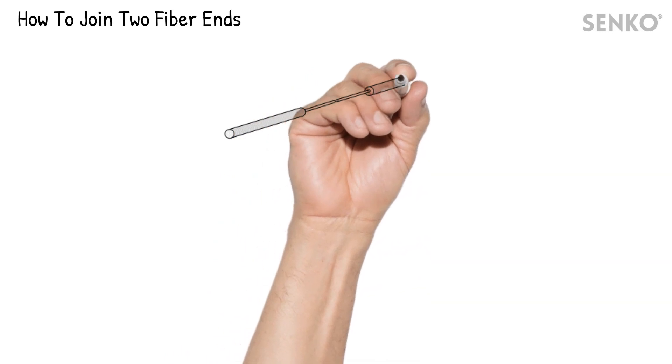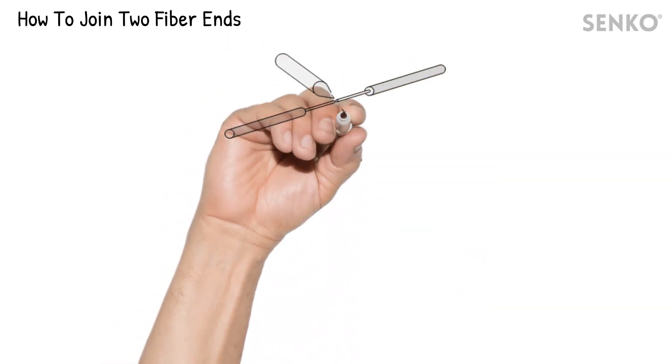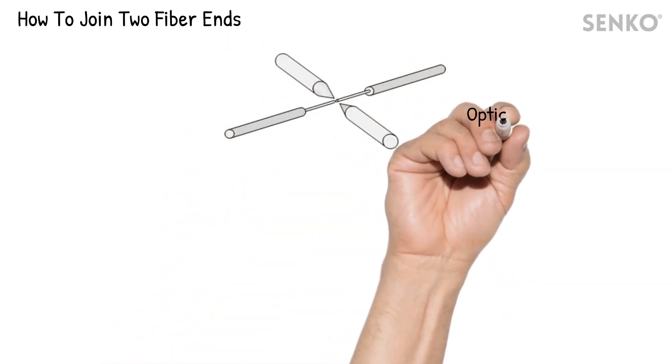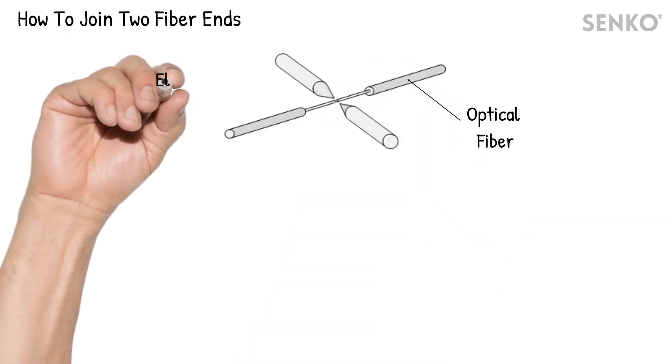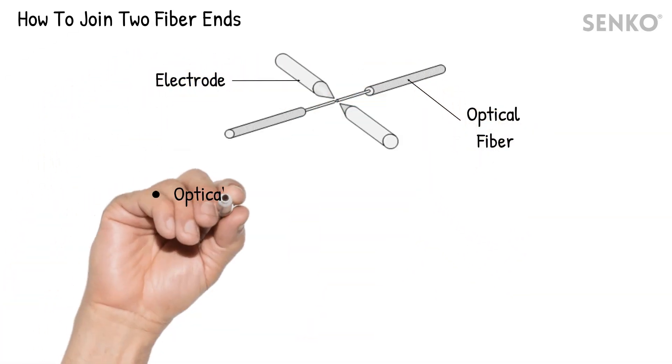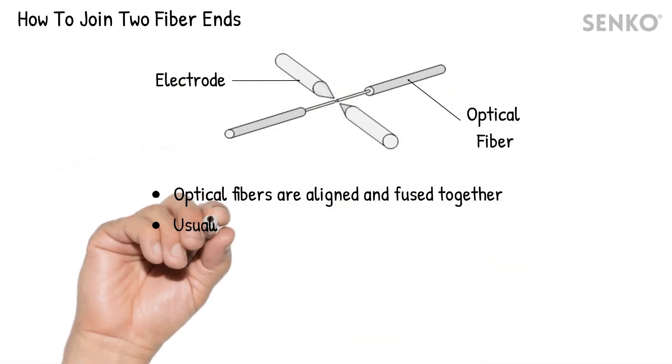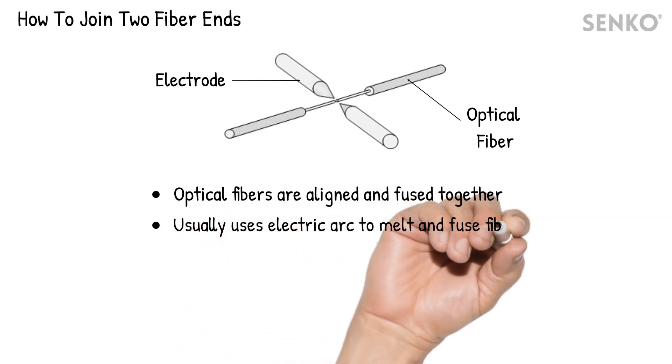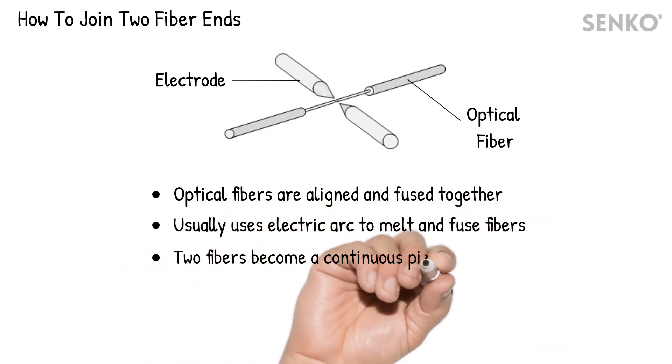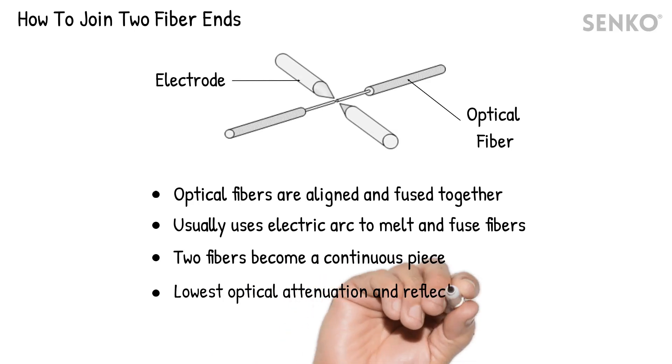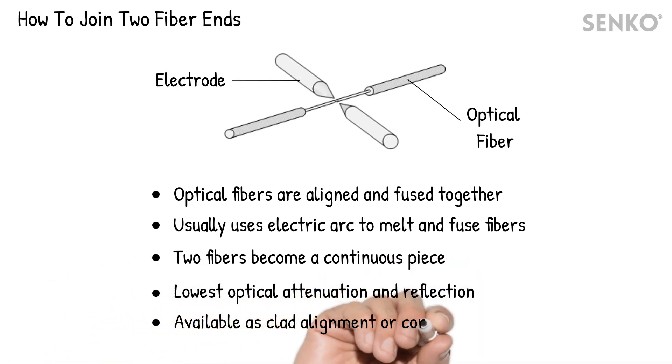Fusion splicing is done by using two fiber ends. Usually, an electric arc is applied to melt the two fiber ends to create a continuous piece of fiber. This splice point is then protected using a splice protection sleeve. This method produces one of the lowest attenuation of any fiber joints.